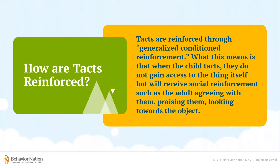Next, let's discuss how TACs are reinforced. TACs are reinforced by something called generalized conditioned reinforcement. Basically, this means that when a child TACs or labels the object or thing that they sense, they are not receiving access to that thing, but rather they receive social reinforcement. This could be the adult agreeing, praising them, or even saying 'ooh, I see that too.'